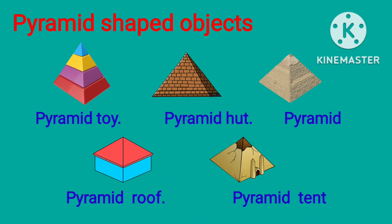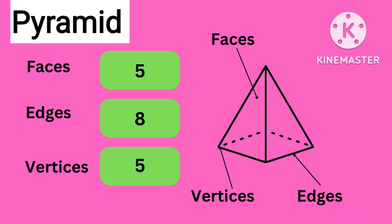Pyramid-shaped objects: look at the shapes of objects below. All these objects have the shape of a pyramid — pyramid toy, heart pyramid, pyramid roof, pyramid tent. The pyramid has five faces, eight edges, and five vertices or corners.